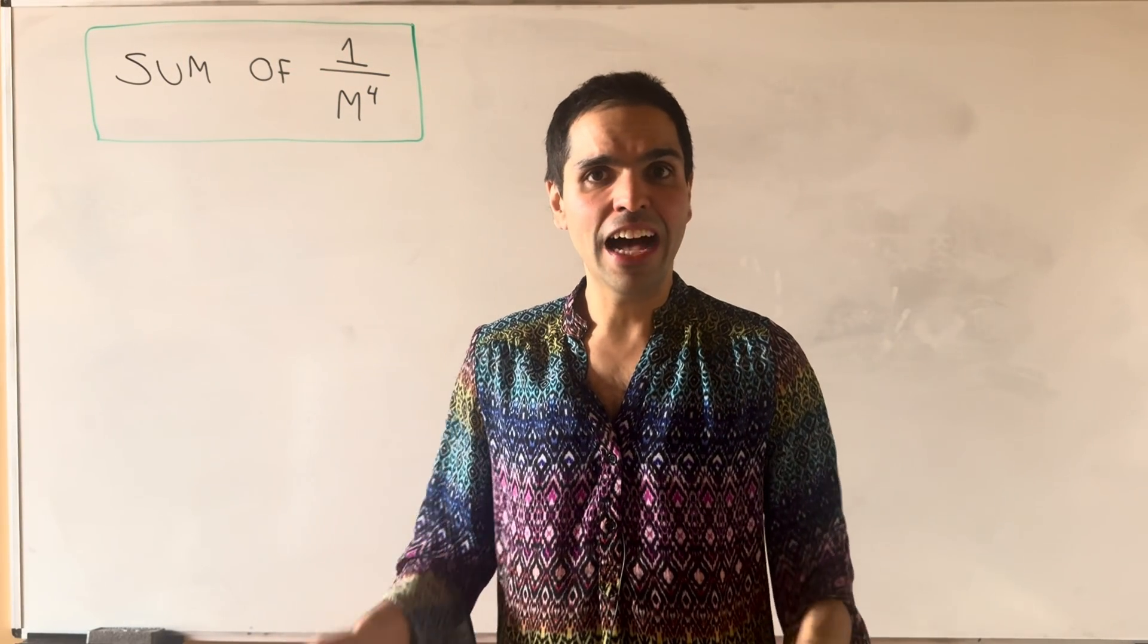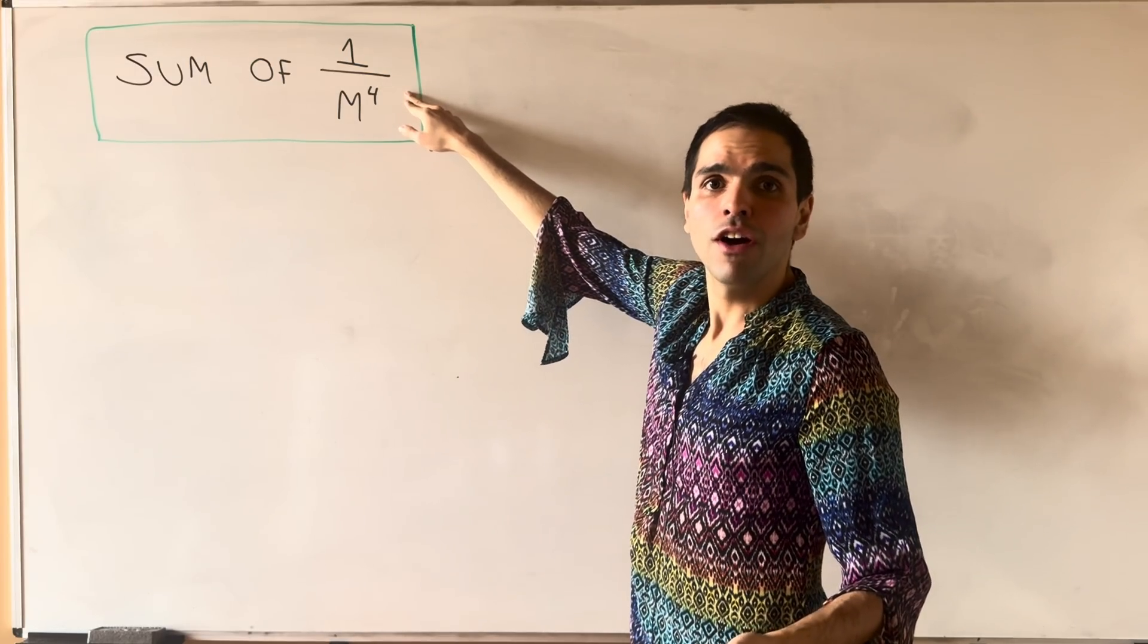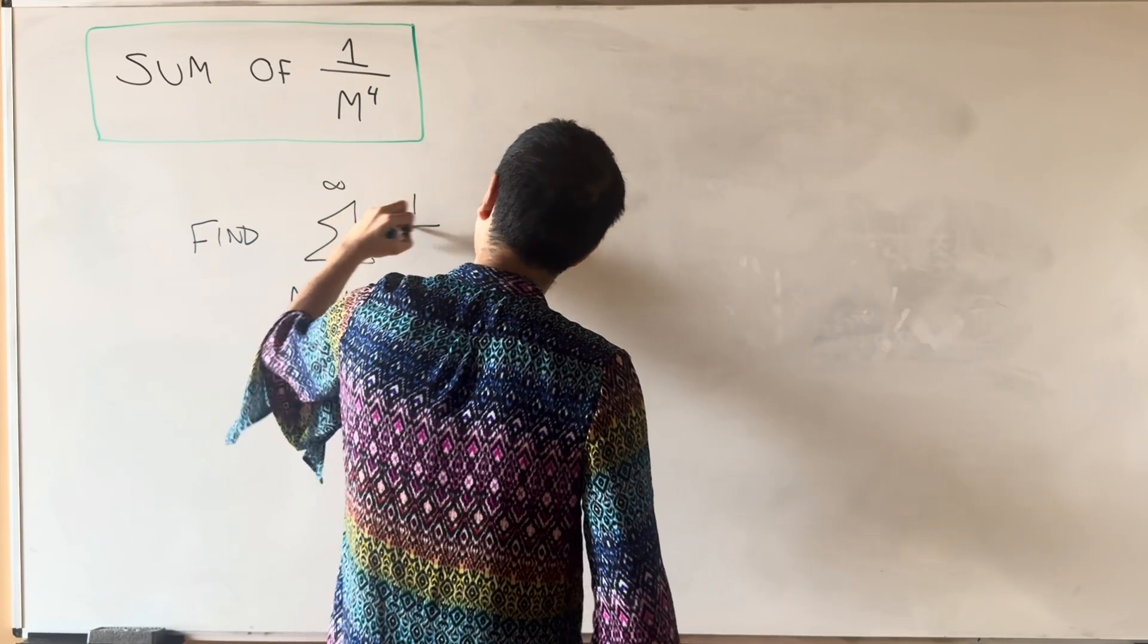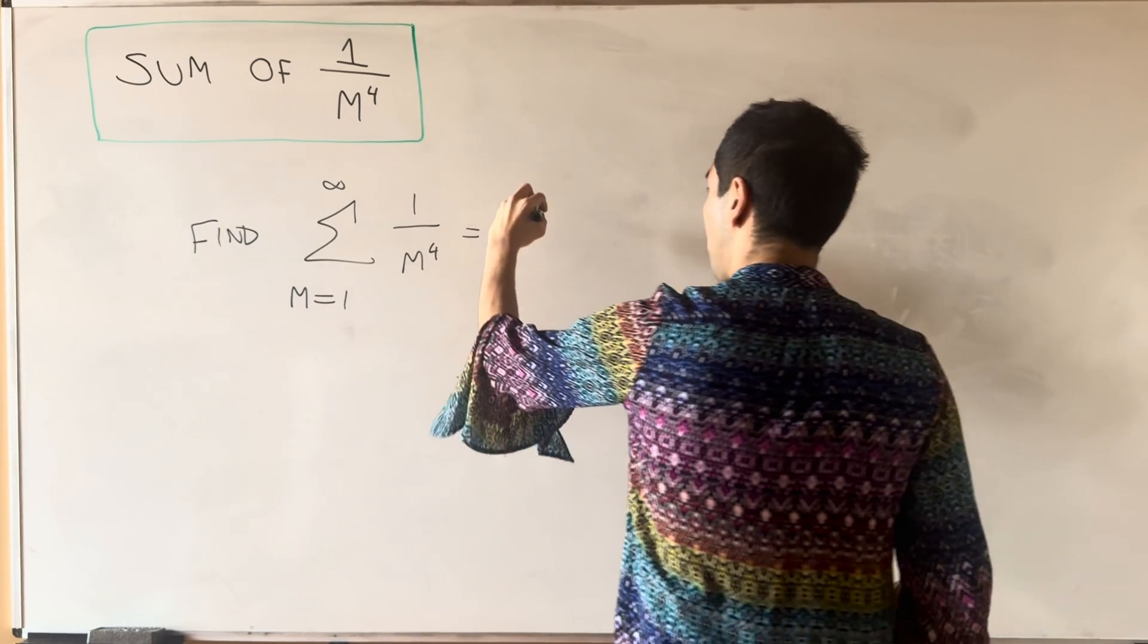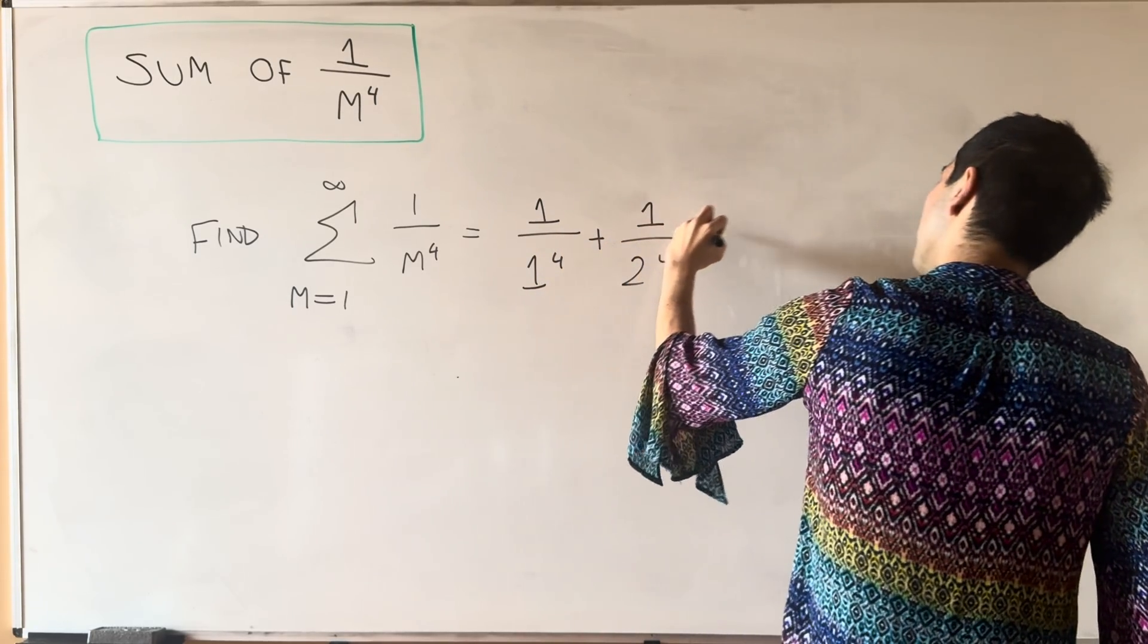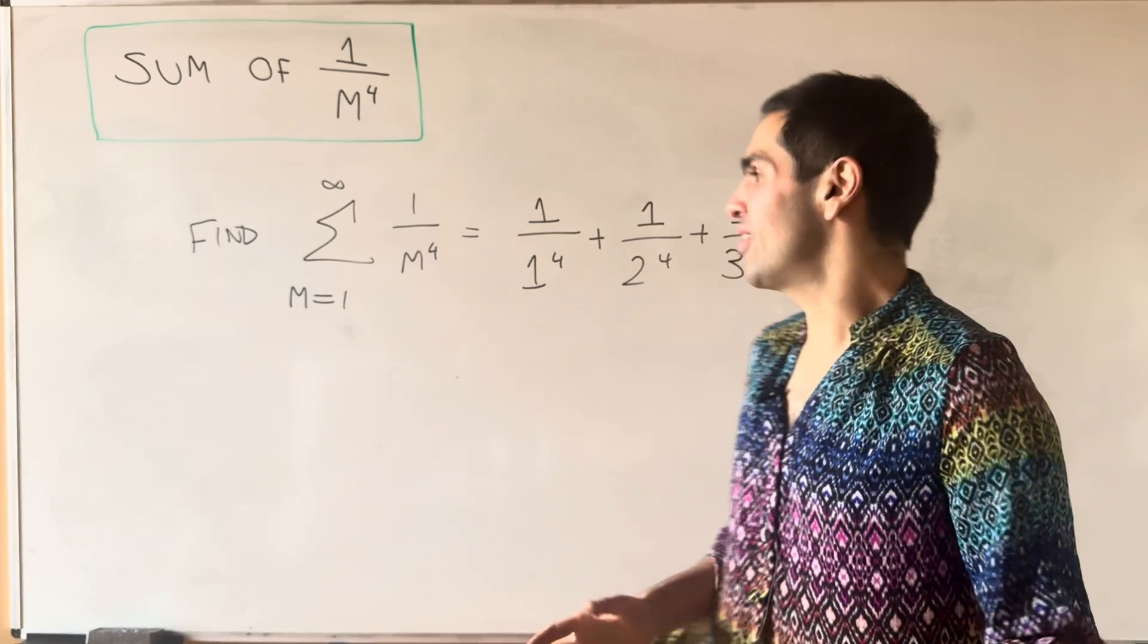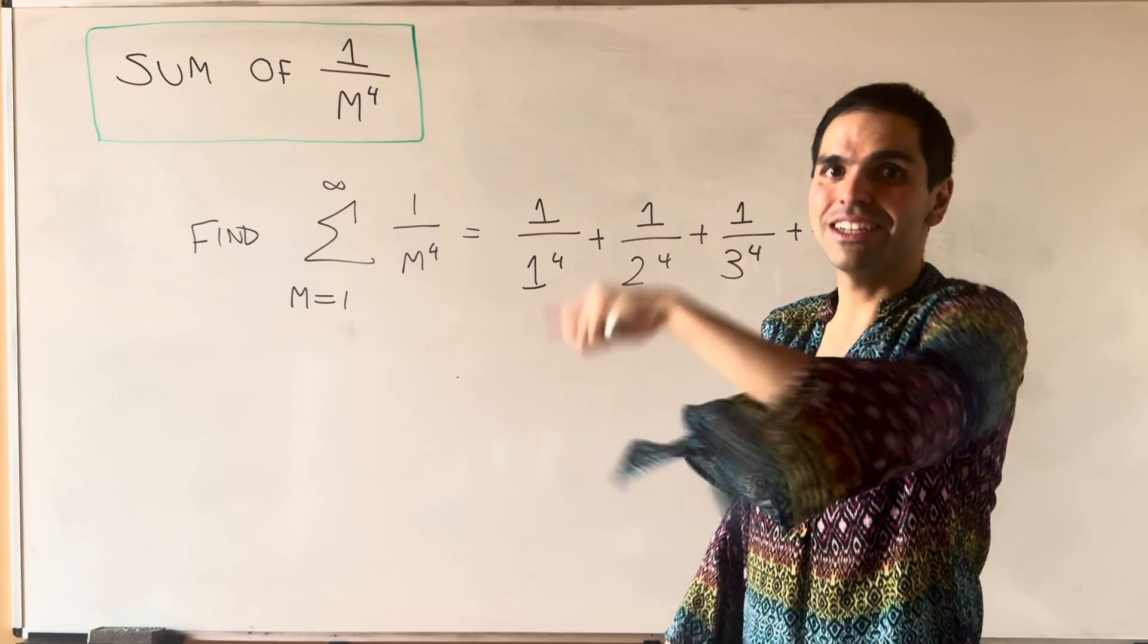Thanks for watching, and today we'll evaluate another really cool sum. This time we'll calculate the sum of 1 over m to the fourth. So let's find the sum from 1 to infinity of 1 over m to the fourth, which is the sum of the reciprocals of fourth powers. So 1 over 1 to the fourth, plus 1 over 2 to the fourth, plus 1 over 3 to the fourth, et cetera. And this is another one of those formulas that your calculus instructor told you it's finite, but now we can actually find a sum, because we're cool like that.